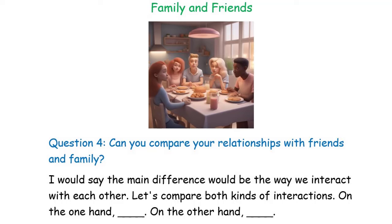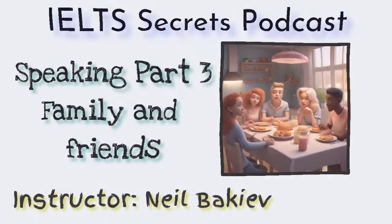Now, let's listen to a band 9 response. Can you compare your relationships with friends and family? I would say the main difference would be the way we interact with each other. Let's compare both kinds of interactions. On the one hand, with my friends, interactions are often more casual and spontaneous, filled with laughter and shared experiences. On the other hand, interactions with my family tend to be more rooted in tradition and deeper emotional connections, where we support and cherish each other through thick and thin.